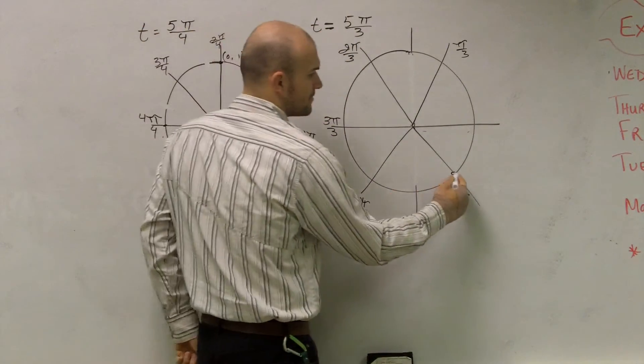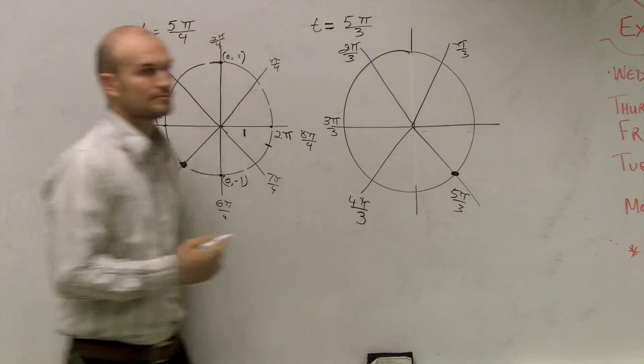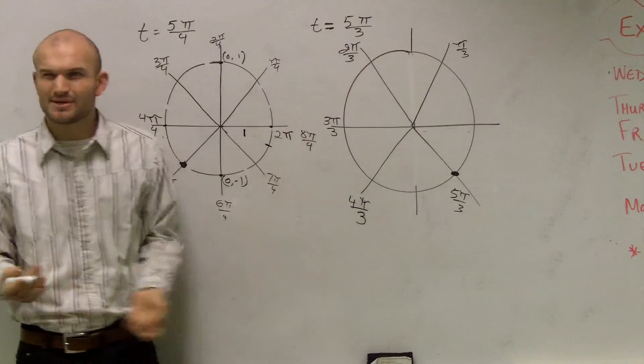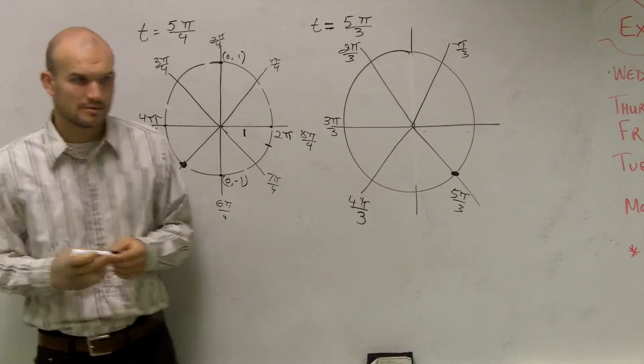So then where's 5π over three? Right there. Right there. Because you go around. Does that make sense? Yeah.